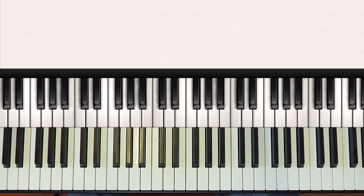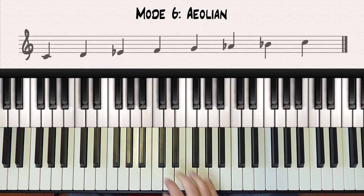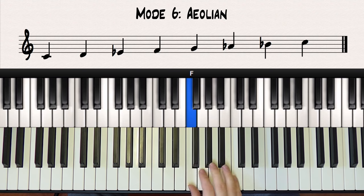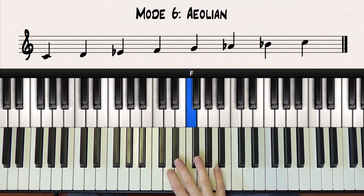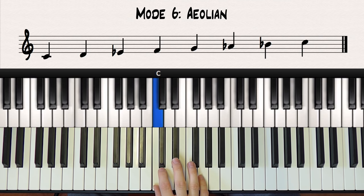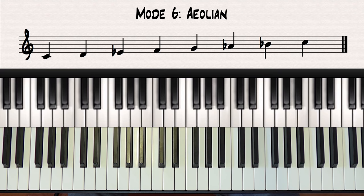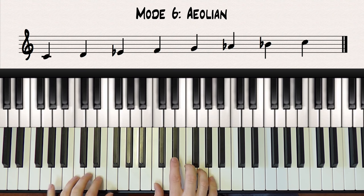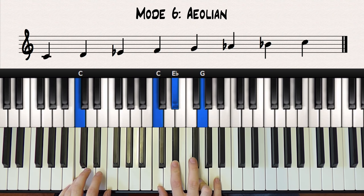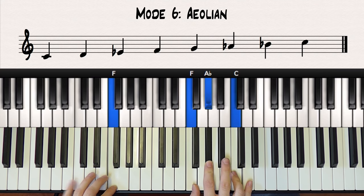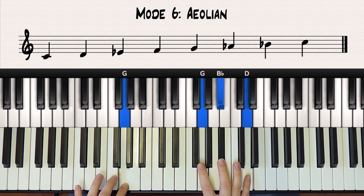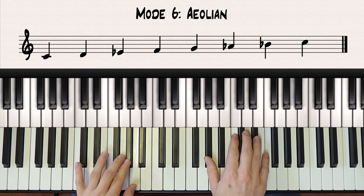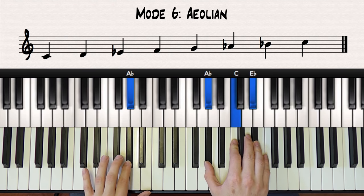Moving on to the sixth mode we have the Aeolian mode. The Aeolian mode is just a fancy name for the natural minor scale so it shouldn't need much explanation. Some characteristic chords for the Aeolian mode would be the minor one chord, the minor four chord, and the minor five chord, and also the major flat six chord and the major flat seventh chord.